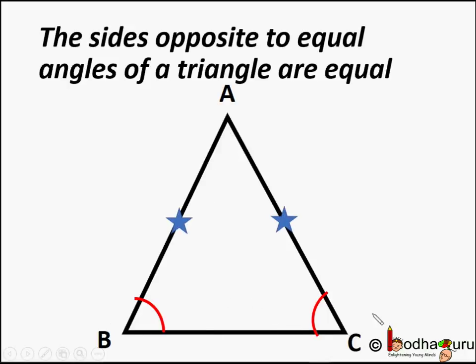Here in triangle ABC, angle B is equal to angle C. And we need to prove their opposite sides are equal. That is AB equal to AC.